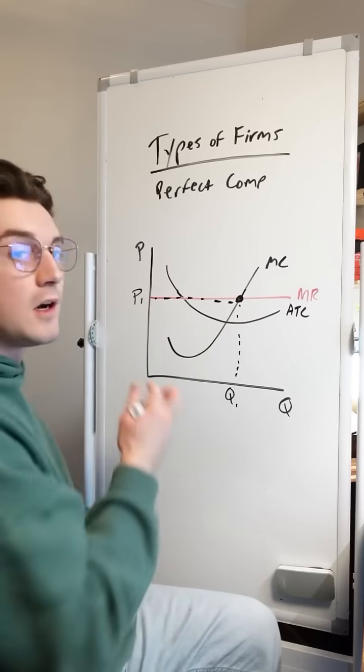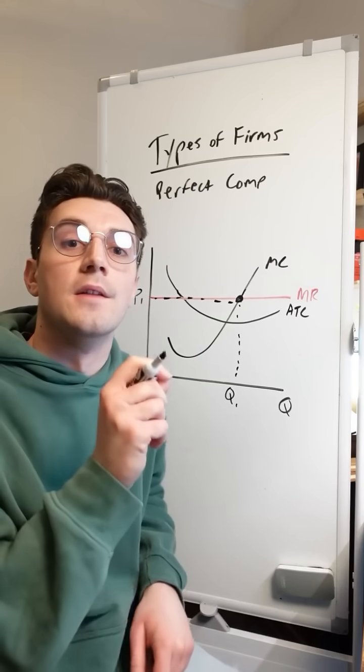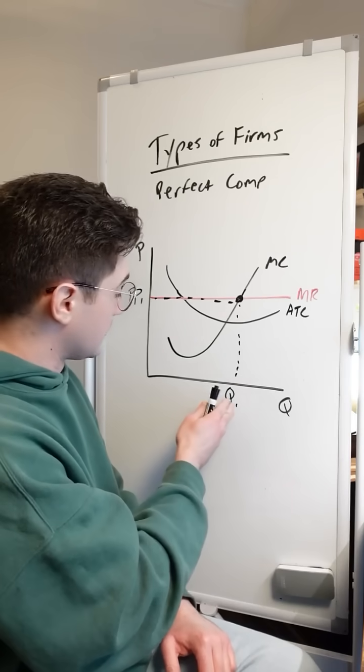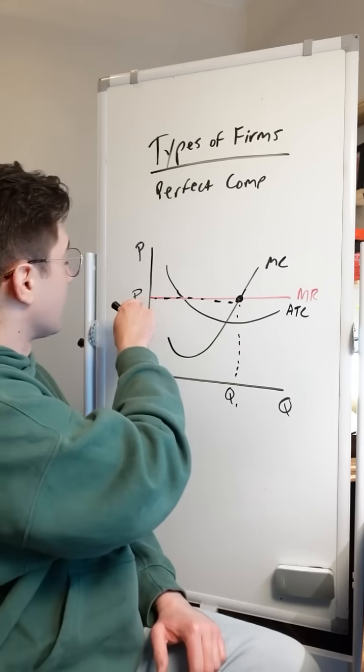At this price P1 and at this quantity Q1, this perfectly competitive firm is profit maximizing. And no matter what, they should produce this quantity of units at this price.